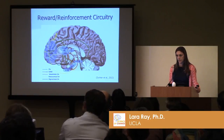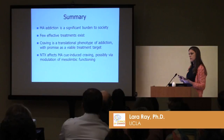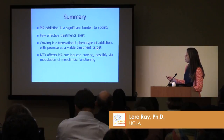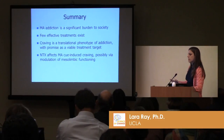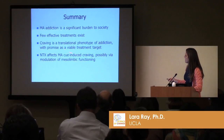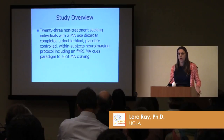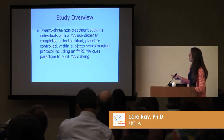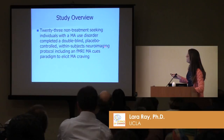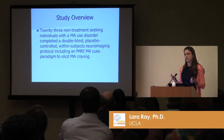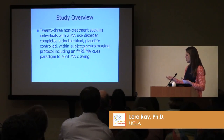So in brief summary: methamphetamine addiction is a problem for which there are no available treatments, craving is a translational phenotype anchoring our study, and we think naltrexone affects cue-induced craving via modulation of mesolimbic functioning. To get at this more mechanistically, I'm going to show you a placebo-controlled randomized controlled trial of naltrexone in methamphetamine-dependent patients, where participants complete a neuroimaging protocol on both naltrexone and placebo, serving as their own controls.